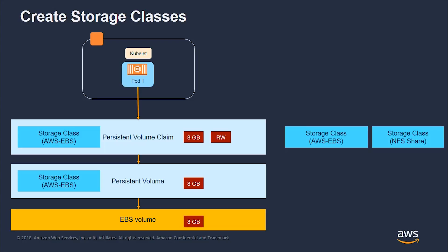For example, whether it's EBS volumes — IO1, GP2, or other types — or if it's an NFS share or some other type of storage, containers don't care about that. All of that is encapsulated in a persistent volume. Once you've created the persistent volume, to mount it and connect it to your container, you have to create another object called a persistent volume claim. A persistent volume claim is a request for a persistent volume. There is also a concept of a pod in Kubernetes, which could be one or more containers that always run on the same host. Your pod will have this persistent volume claim attached to it, which in turn contains a persistent volume and that facilitates connection to an underlying storage such as an EBS volume.